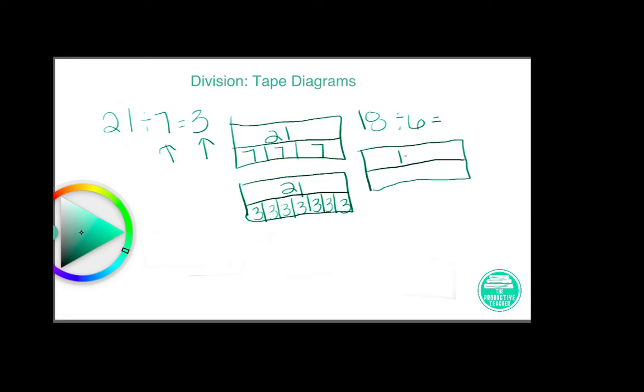I know that I have 18 total, and I know that I have 6. Now the 6 can be the number in each box or it can be the number of boxes. It's easier if I don't know the other number to draw it as the number of boxes. So I'm going to make 6 boxes here.